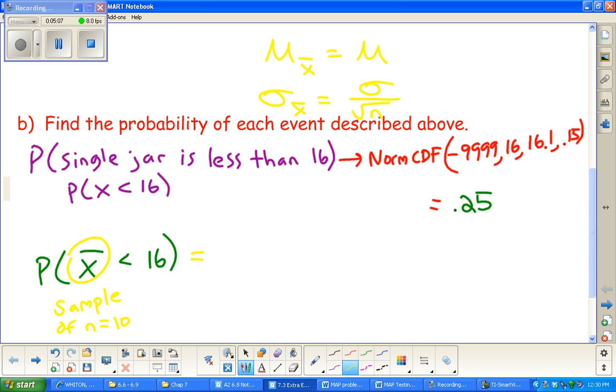That's why as n gets larger, the standard deviation gets smaller, because the n is in the denominator here. Bigger denominators make the entire answer get smaller. Our setup is going to be exactly the same as what we did before. We know it's normal CDF because the population was given to us as normal, so the sample distribution is going to be normal.